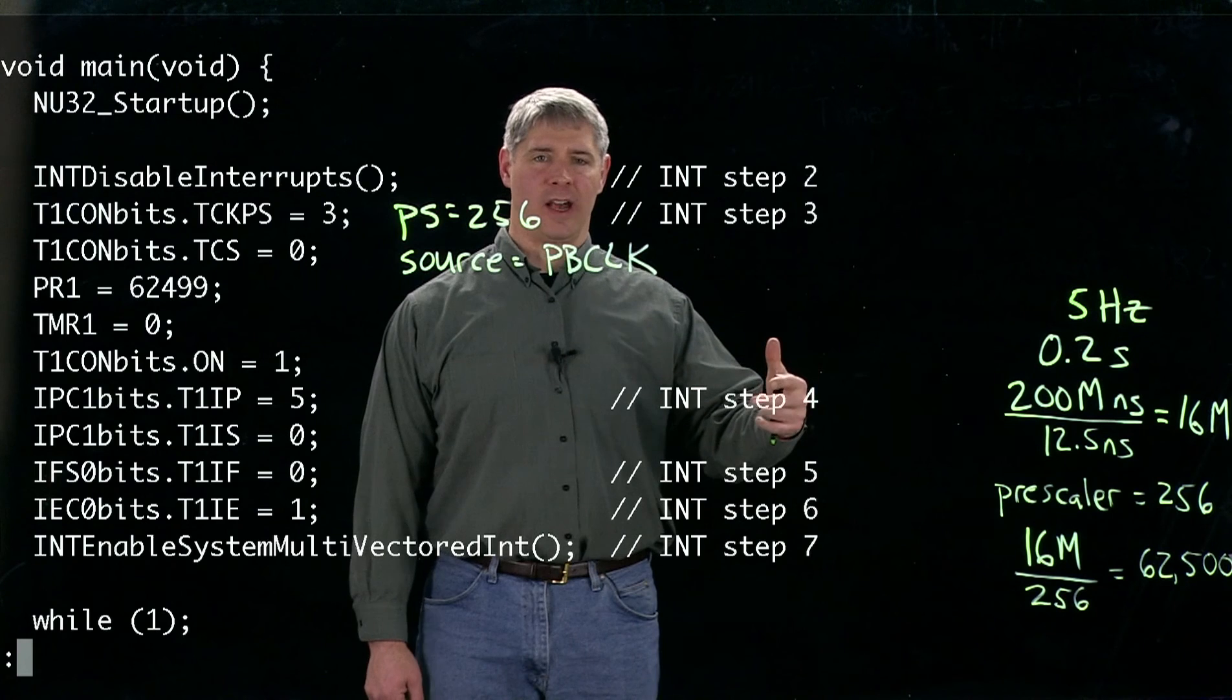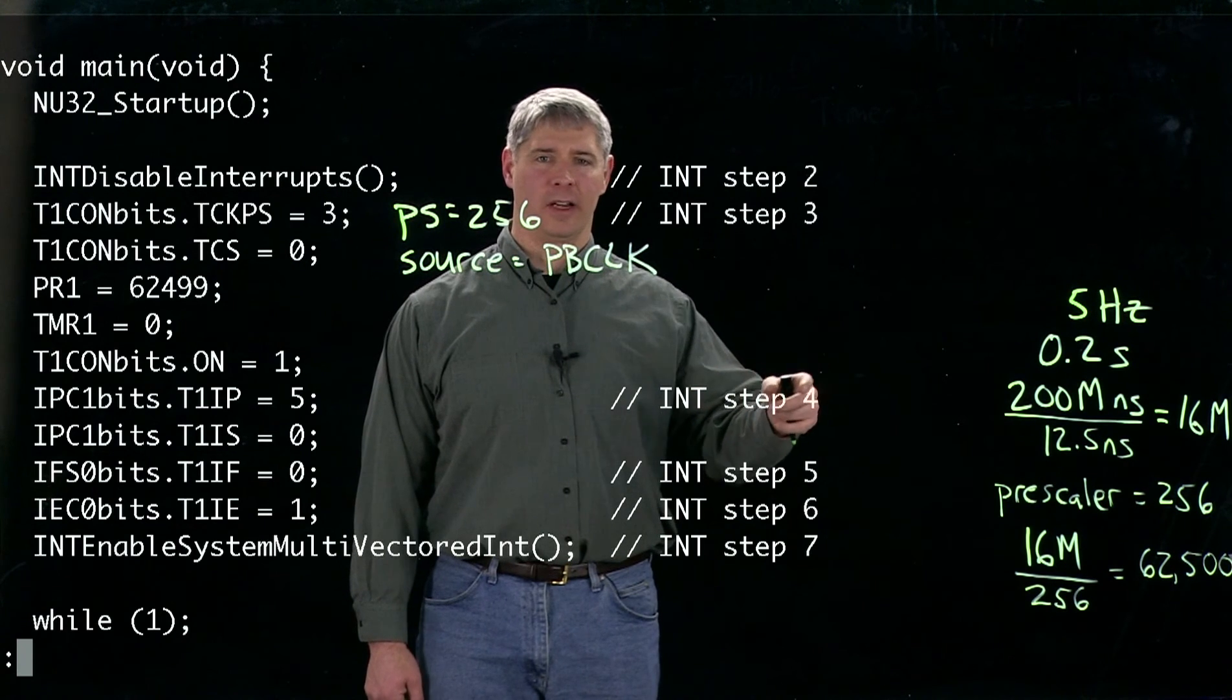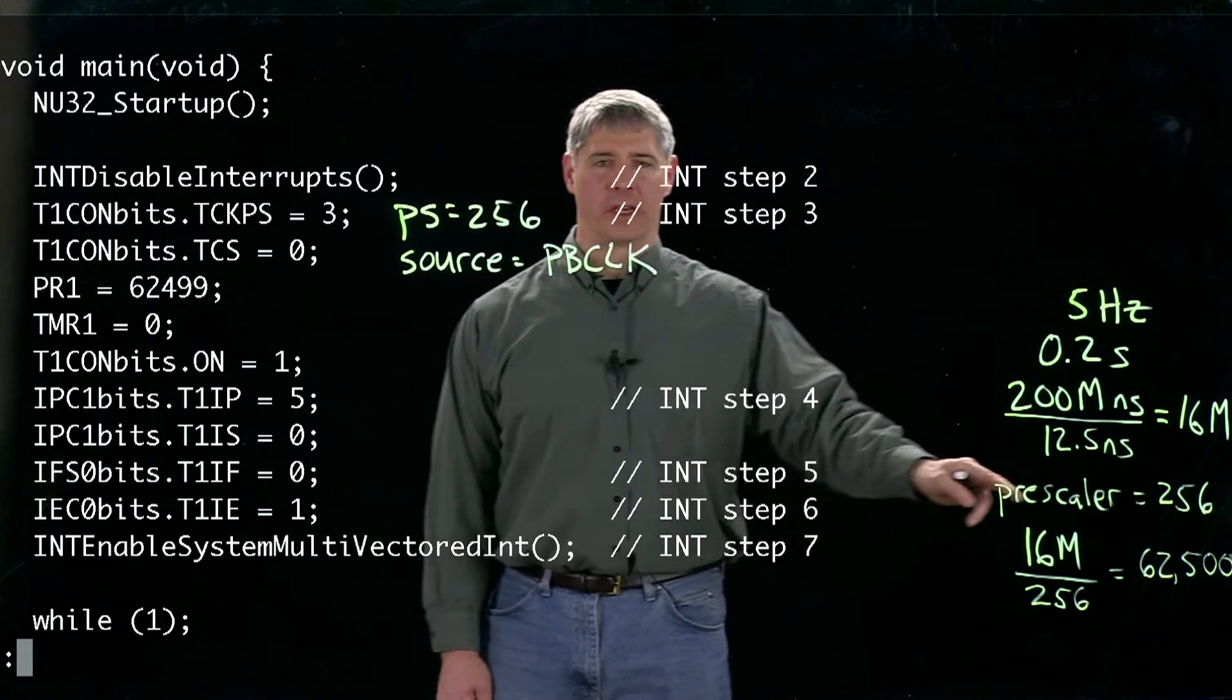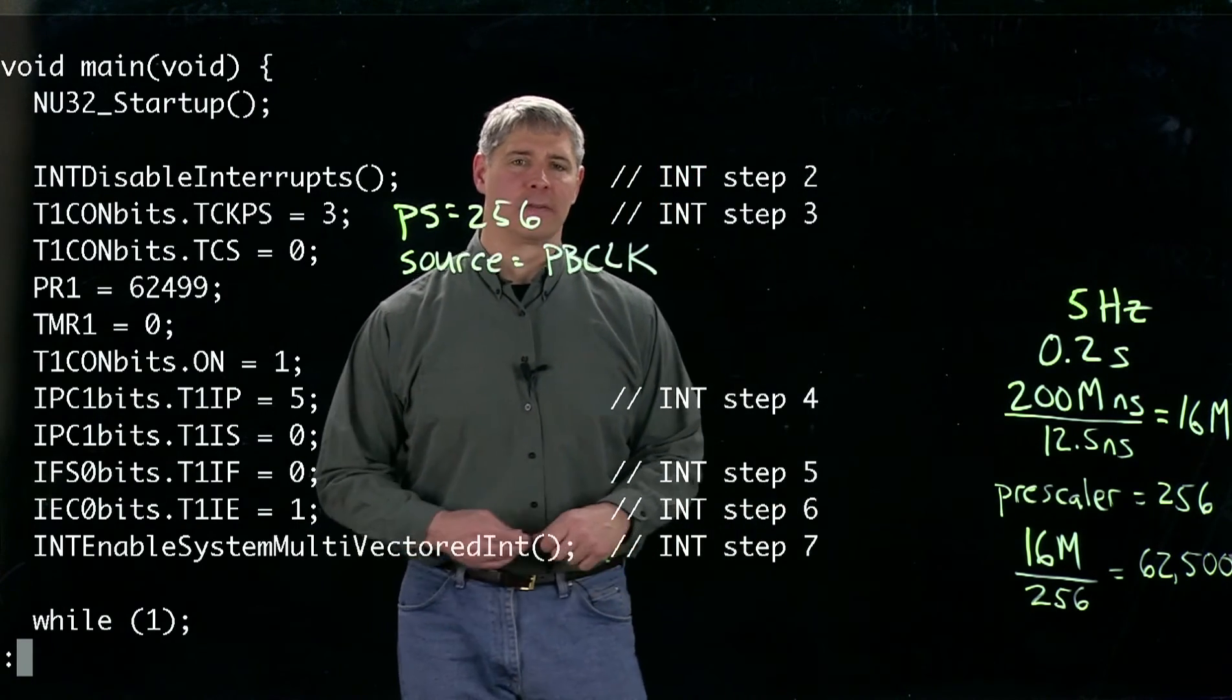And the next time the counter gets another input pulse, it will go back to zero. So zero to 62,499 makes sure that we're getting 62,500